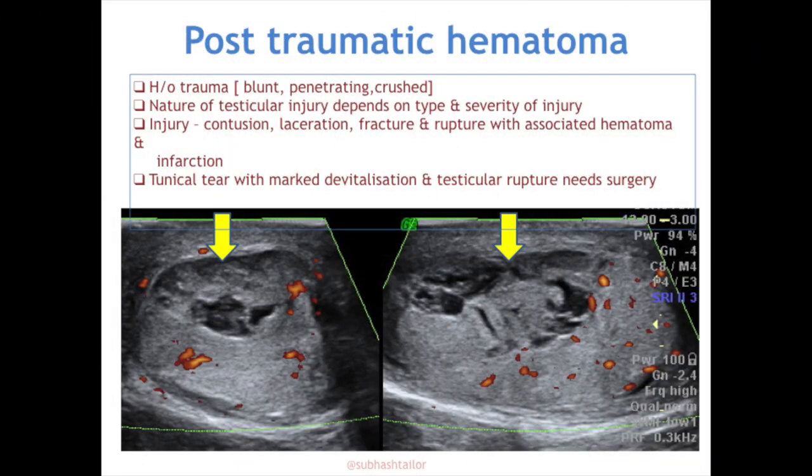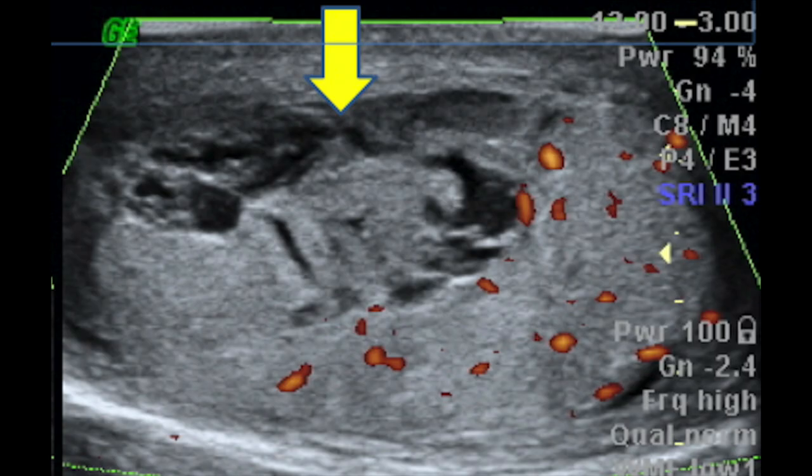Post-traumatic hematoma can present as a cystic lesion. Trauma can be blunt, penetrating, or crush injury. Testicular injury can be contusion, disruption, laceration, fracture, or rupture with associated intra- or extratesticular hematoma or infarction. A case of blunt trauma shows a large focal hypoechoic inhomogenic ecotexture devoid of vascularity with normal vascularity in the rest of the testis and intact tunica — a focal testicular disruption with large intratesticular hematoma showing variable cystic changes due to variable age. The patient was conservatively treated.